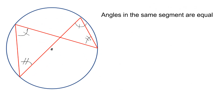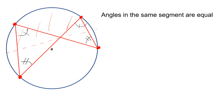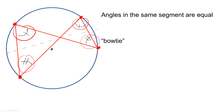Our next theorem is that angles in the same segment are equal. If you take four points on the circumference, forming two chords, you create two segments of the circle. The angles in the same segment are equal — I like to think of it as a bow tie shape. It's a nice way to remember it.